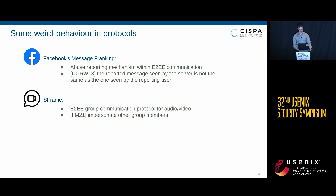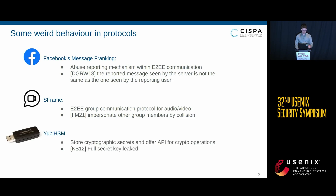The S-Frame protocol is an end-to-end encrypted group communication protocol for audio/video, and Isobe et al. in 2021 found a way for group members to impersonate other group members. An older example: the UBHSM is a device to store cryptographic secrets like keys and offers an API to encrypt using those keys such that secrets never leave the device. Kinnaman and Steele in 2012 found an attack that leaked the secret key.